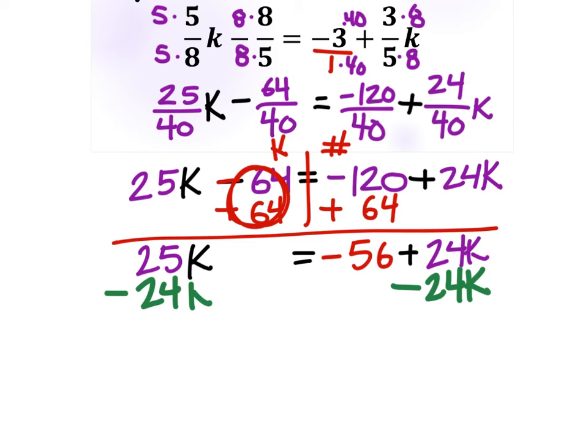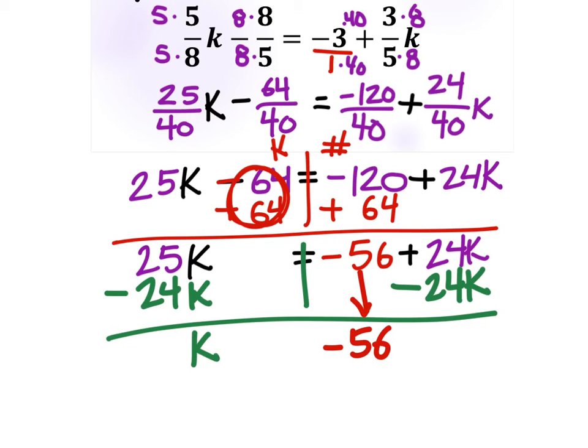Well, this brings down our negative 56. And we still have some K's, but how many do we have? 25 minus 24 is 1. We don't have to show that one, so we can just say from here that K equals negative 56.